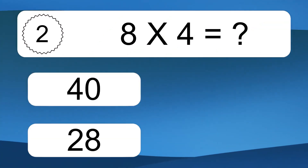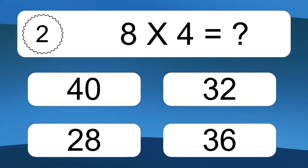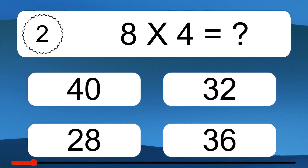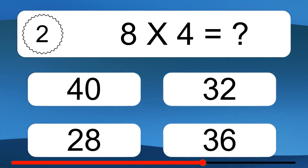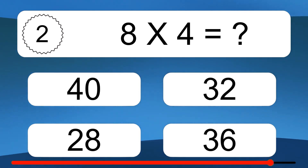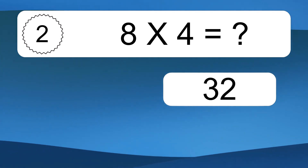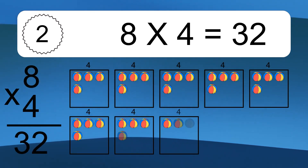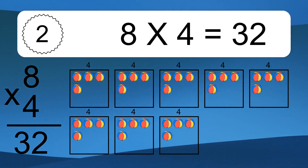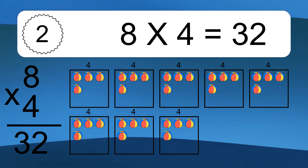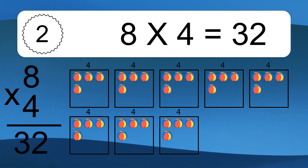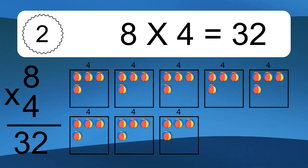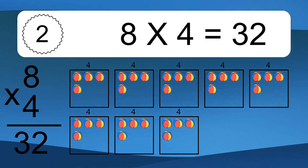Eight times four equals what? Eight times four equals 32. We have eight boxes, and each box has four colorful balls inside. If you count all the balls in all the boxes together, you will have eight times four balls. This equals 32 balls.